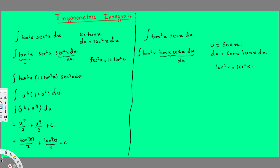We know that tan²x = sec²x - 1, so I'll substitute this identity for tan²x. This gives us (sec²x - 1) · tan x · sec x dx. Now I can write everything in terms of u: (u² - 1) du.